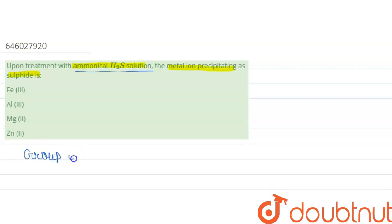ammonical H2S. Ammonical H2S means H2S plus NH4OH, or you can generally write this with NH4Cl.